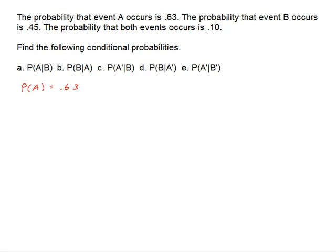So the probability of A is 0.63, the probability of B is 0.45, and the probability of A intersect B — the probability that both events occur — was 0.10.